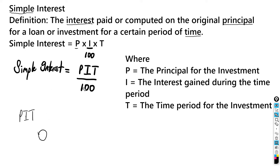Simple interest equals PIT over 100, where P is the principal for the investment, I is the interest rate during the time period, and T is the time period for the investment.